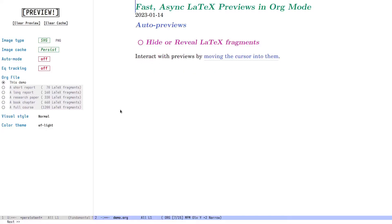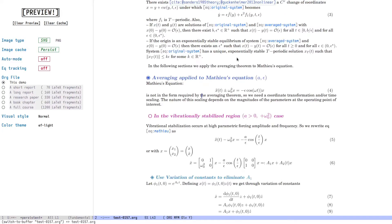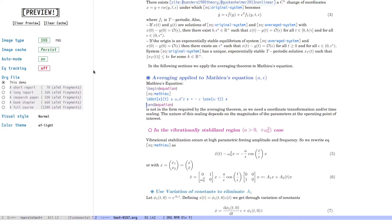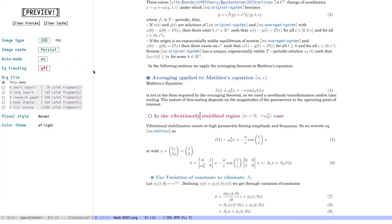You can now interact with our previews by simply moving the cursor into or out of them. This functionality is provided as a separate minor mode. So let me turn on auto mode. And now as I move my cursor into a fragment, it opens up and if I move it out, it closes up again. With auto mode active, you can interact with the underlying text like you would any other, for example, by searching.